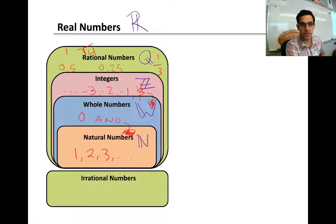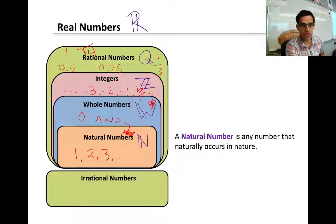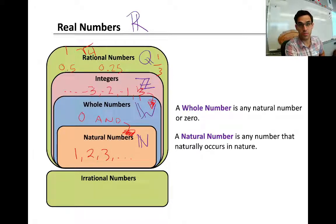Some categories of real numbers. First of all, we have natural numbers. Those are numbers that naturally occur, or numbers that occur in nature. One is a natural number. I can find one coconut in the wild, two apples in a tree. Whole numbers are any natural number and zero.